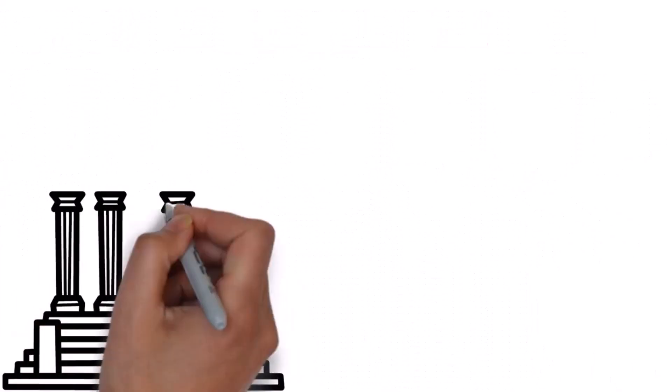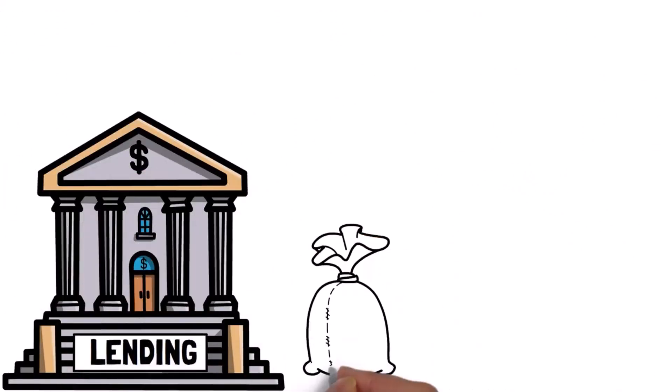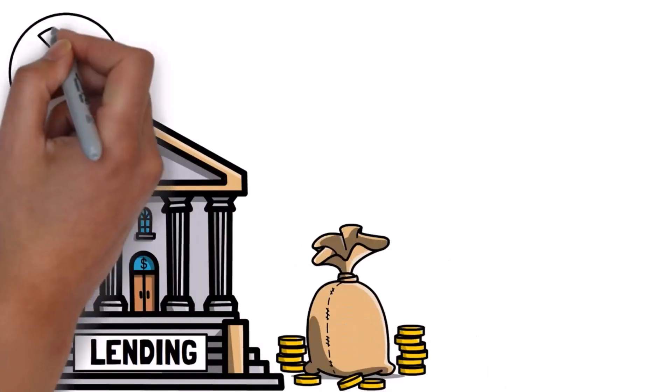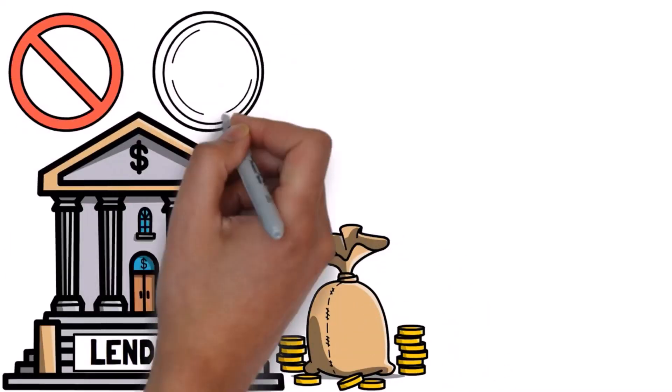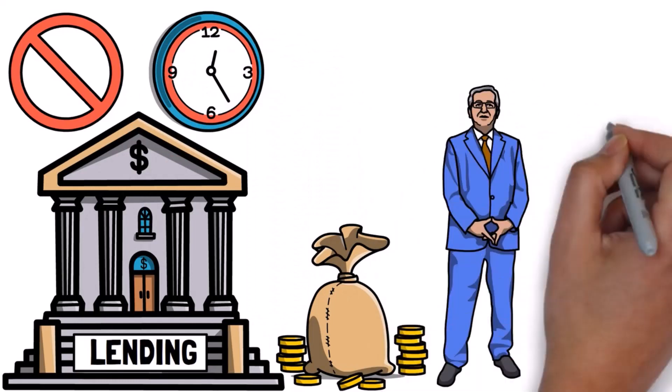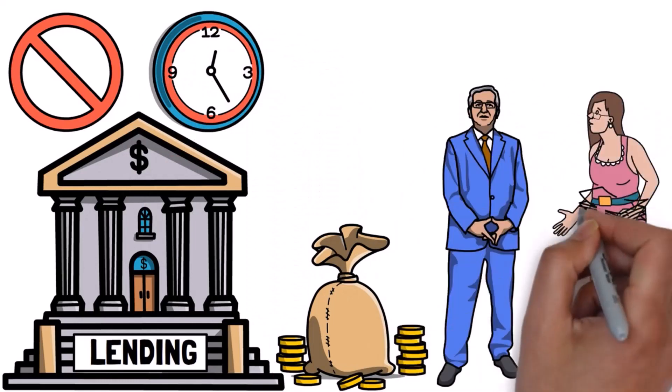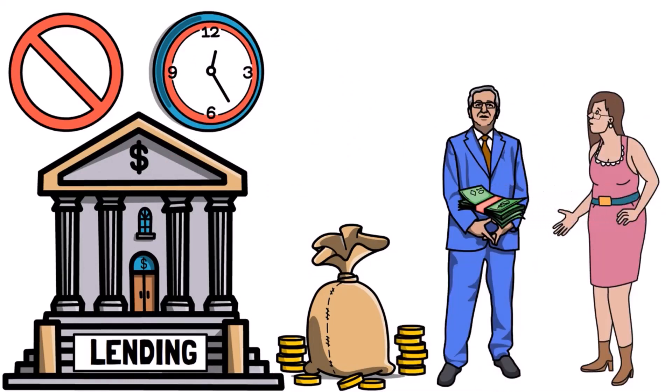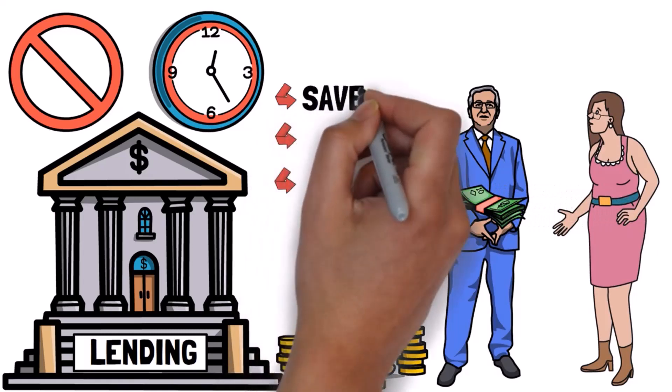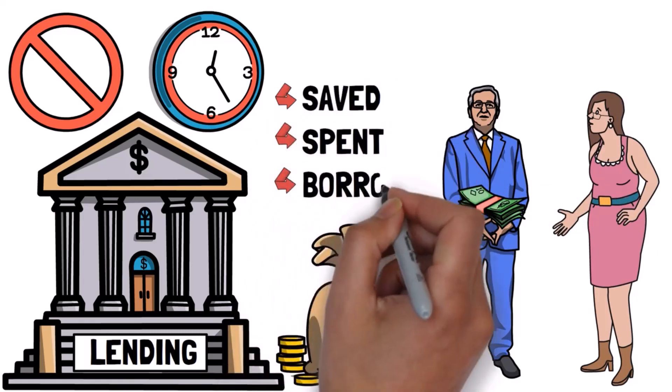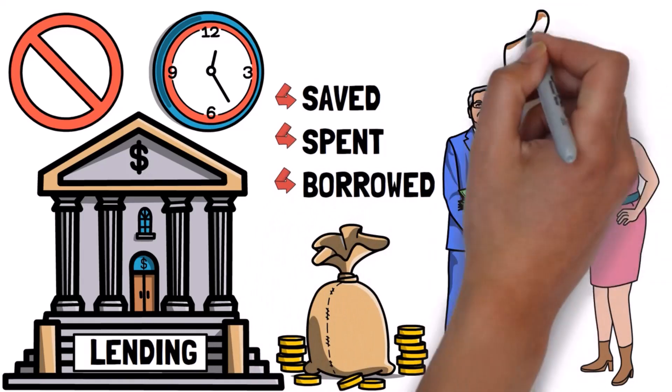Before the bank introduced a new service called lending, if someone in the town wanted to borrow money, it had to be money that someone else in the town wasn't using at that time. For example, if John wanted to borrow from Sally, Sally couldn't spend the money she lent him until he paid it back. This kept things stable. People saved, spent, and borrowed based on their own needs and choices.